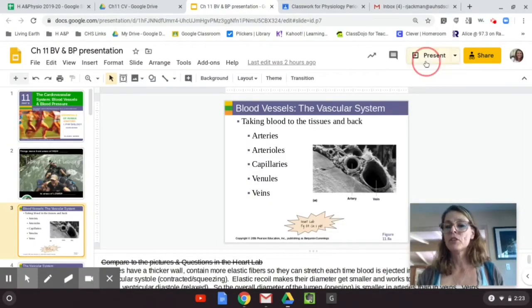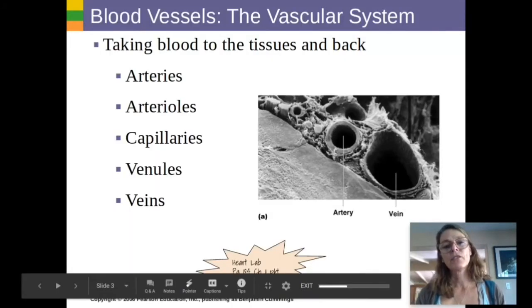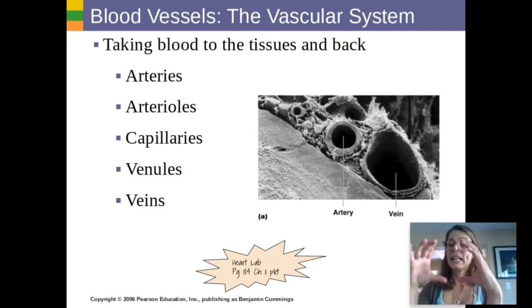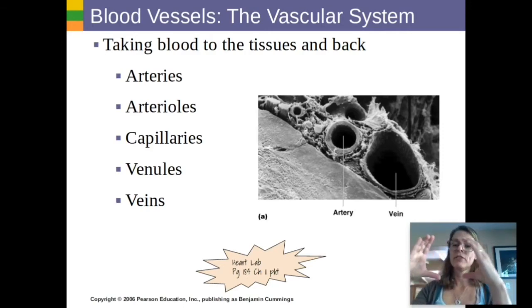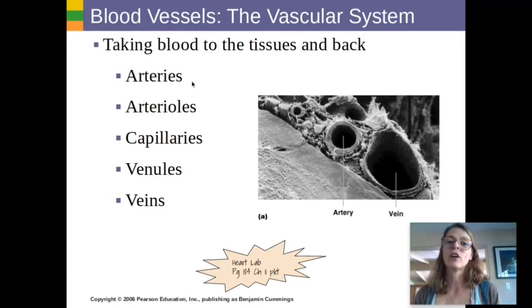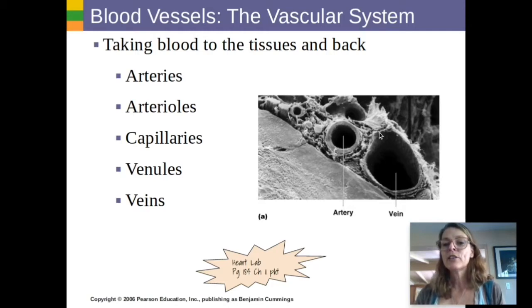The first part of your packet — you should have it out to take notes — is about the different types of blood vessels. All blood vessels have an opening inside called the lumen. The size of that lumen can get larger if they're dilating — called vasodilation — or the smooth muscles around the edge can constrict and make them smaller. Vessels that go away from your heart are called arteries, identifiable by their thicker walls. Veins have a larger lumen and a thinner wall.